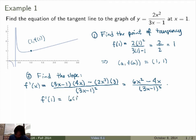So I get 6 times 1 minus 4 times 1, divided by 3 times 1 minus 1 squared. So that's 6 minus 4, that's 2, divided by 3 minus 1, that's 2 squared, so that's 4. So 1/2. Alright, so I have everything I need.